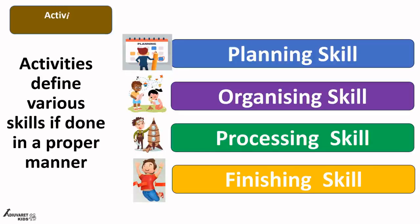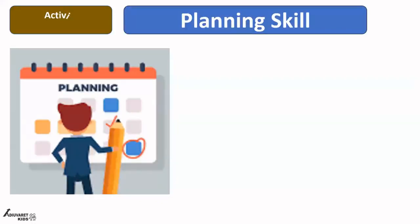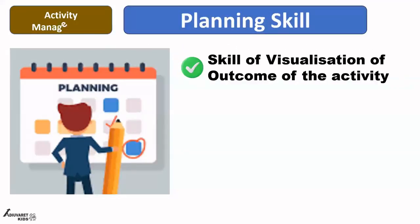These are the four skills we can manage quite well through doing various activities. We'll have extended understanding on each skill, but just to give a brief understanding of how these skills can be developed through activities: when it comes to planning skill, the first sub-skill to look at while trying to build those skills in children is the skill of visualization of the outcome of the activity. When we do various activities in school, there must be one outcome — for example, if we do pottery, how does it look after that activity.